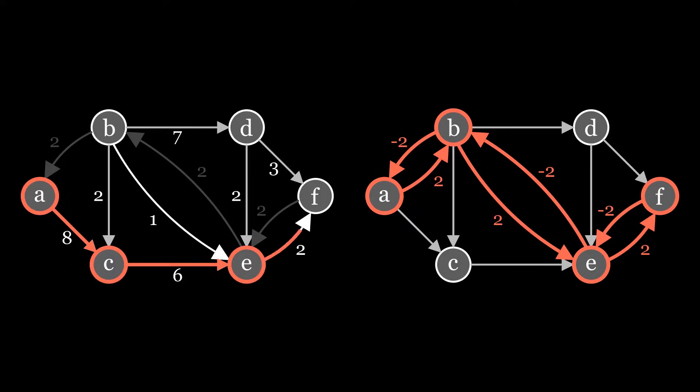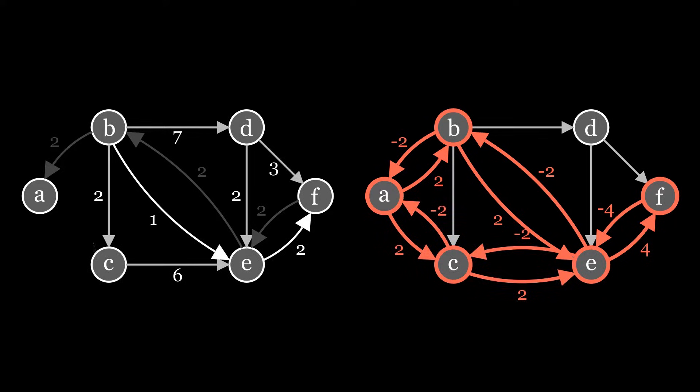Let's do the same with the second path. Once again, 2 is the bottleneck for the flow along this path. Let's add backward edges to both graphs. Now we compute the residual graph.